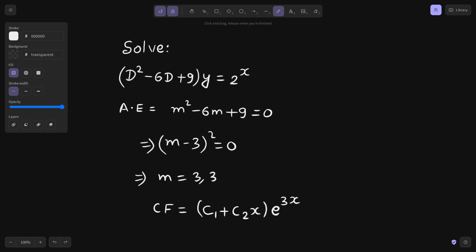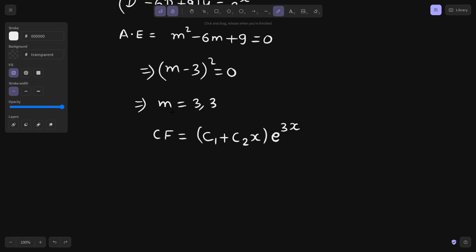Now, coming back to the particular integral. We can write this 2 power x as e power log 2 power x, because we know that a power log x to the base a is nothing but x. Using the same property, 2 power x is just in place of x here, so this will simplify to 2 power x only.